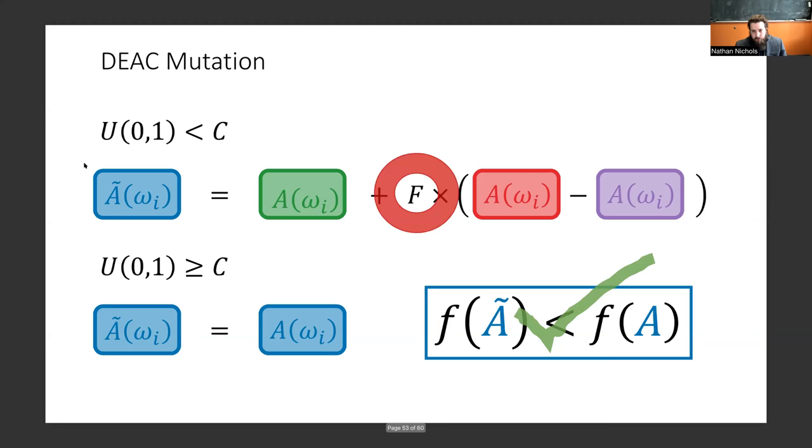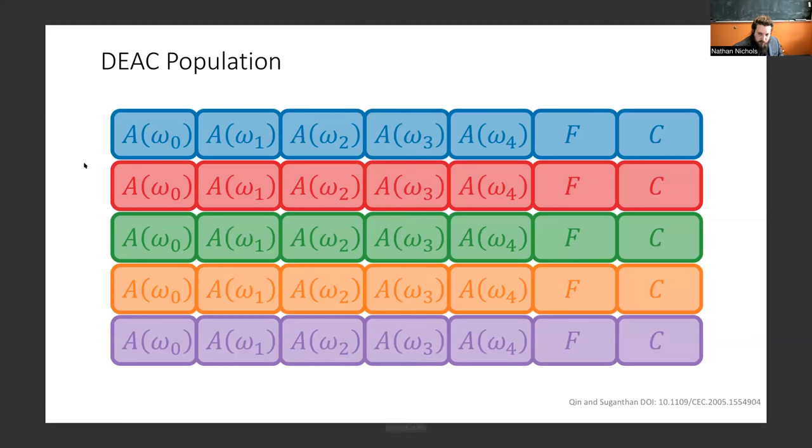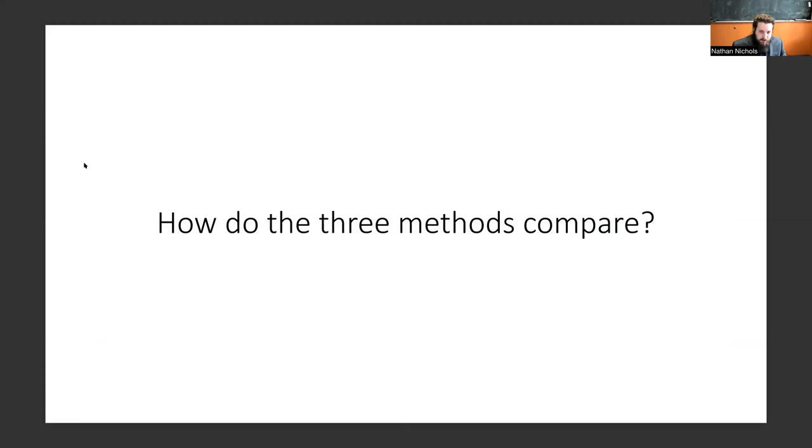So you're probably asking yourself, what's this F? What are those Cs? I thought you promised the parameter-free method. We can take those and sweep them into the genome. This is what's known as self-adaptive differential evolution, pioneered by Kinnan Sugasan. Now we have a parameter-free method in order to achieve these spectral functions.